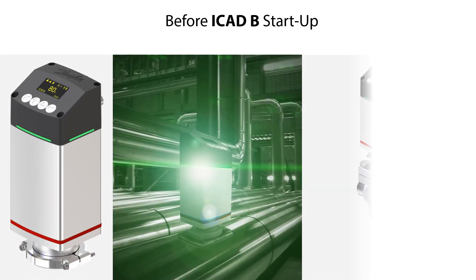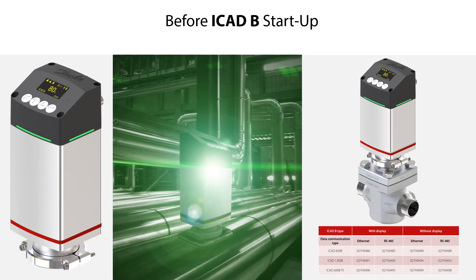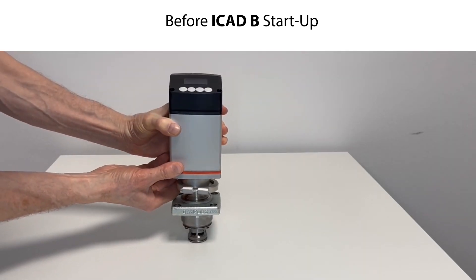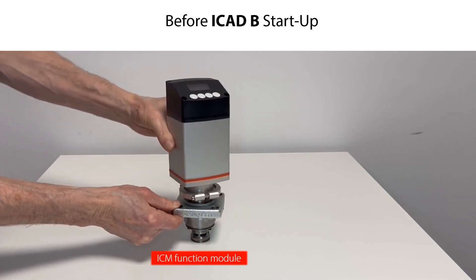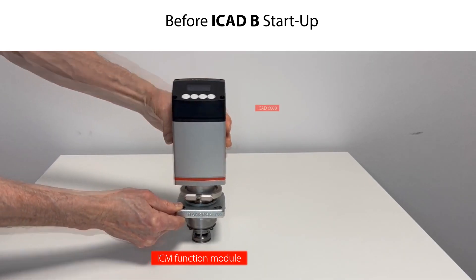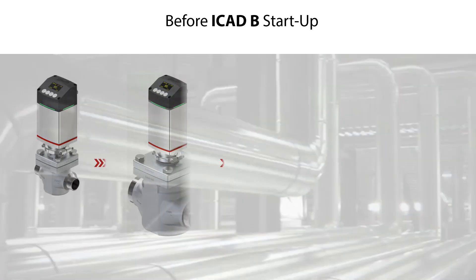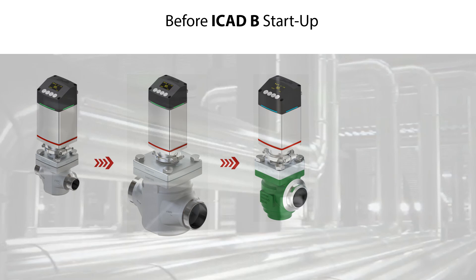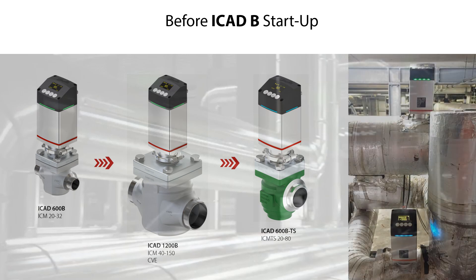Here is an image of the ICAD-B mounted on an ICM motor operated valve, with the available ICAD-B models specified. In this video, we demonstrate the ICAD-B setup and configuration using an ICM function module located on the table, and we mount the ICAD-600B model onto this ICM function module. The setup and configuration procedure is the same for all ICAD-B models and all suitable valves already located in a refrigeration system.